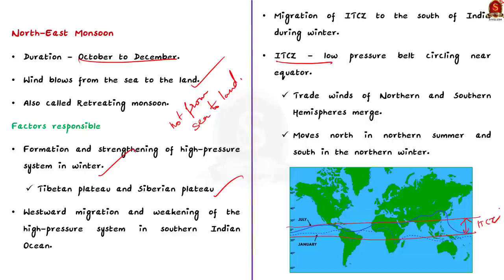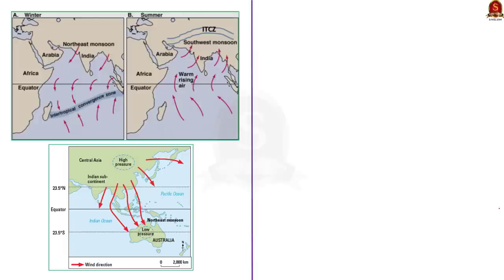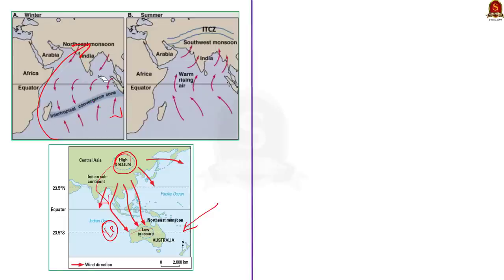The ITCZ is a belt of low pressure circling the Earth near the equator where trade winds of the northern and southern hemispheres merge. It follows the sun — moving north in northern summer and south in northern winter. During summer, the sun is apparently over the Tropic of Cancer, causing low pressure in central Asia and high pressure over the Indian Ocean, driving winds from ocean to land — resulting in the southwest monsoon. In winter, the sun is over the Tropic of Capricorn, reversing the flow to form the northeast monsoon.